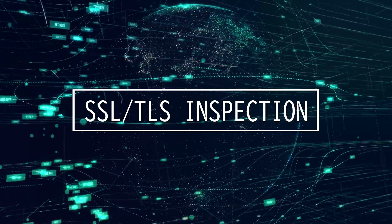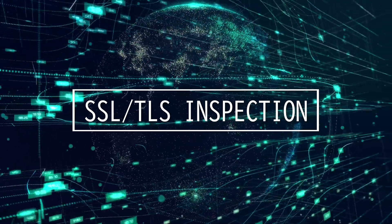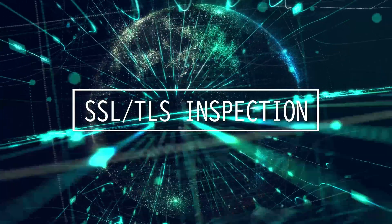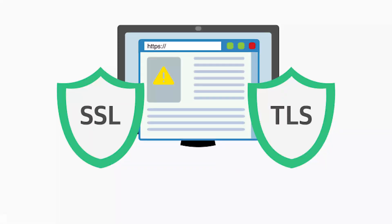This video is on secure socket layer SSL and transport layer security TLS inspection. SSL and TLS do the same thing — they are both cryptographic protocols that provide authentication and data encryption between servers, machines, and applications operating over a network. Basically security. It makes HTTP into HTTPS, for example.